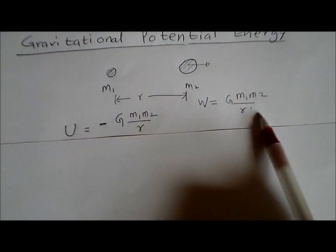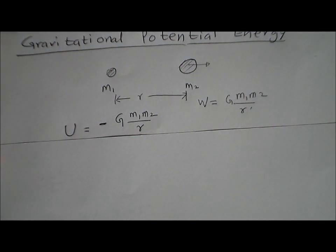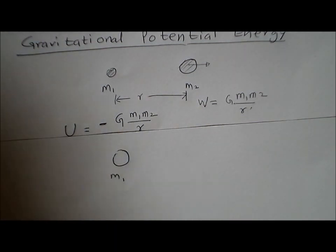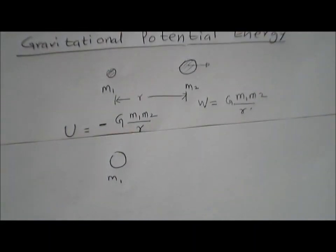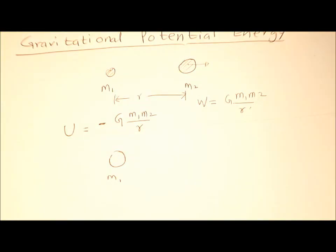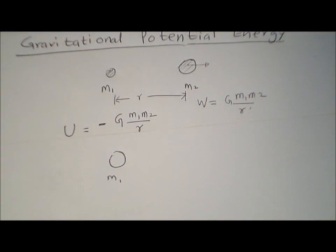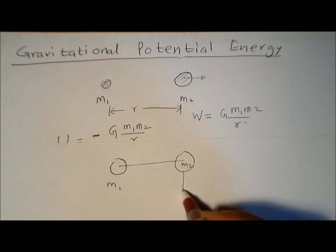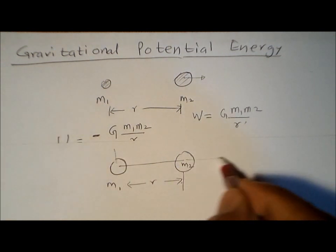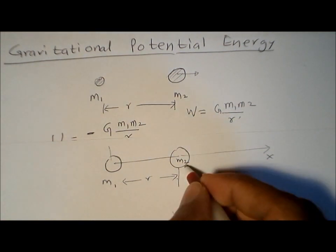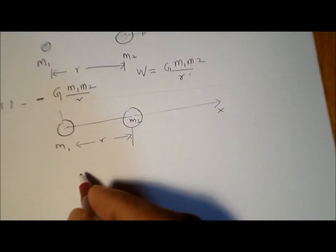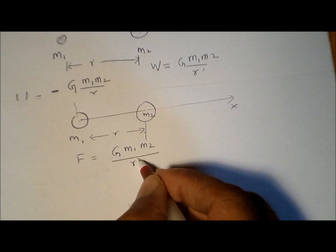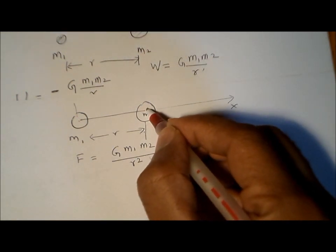We are going to derive this equation using differential calculus. Let's say we have mass m1, and mass m2 is at a distance r from it. We set up an x-axis. There is a force of attraction on mass m2 due to mass m1. According to Newton's law of gravitation, F equals G times m1 times m2 divided by r squared.